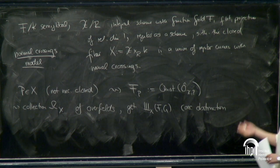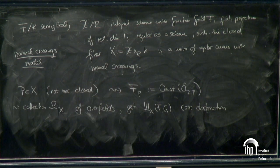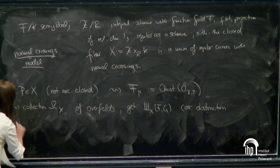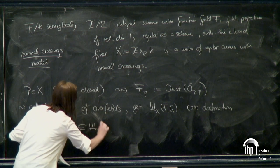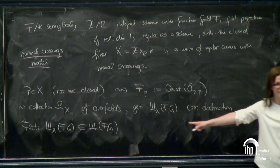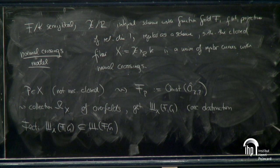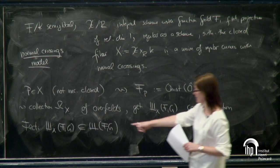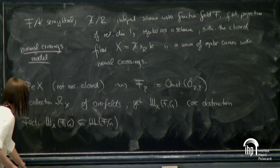This includes the generic points of components of X, giving us a first collection of overfields omega_X. With respect to that collection I can define a corresponding obstruction set, which I call Sha_X. Now if instead I look at discrete valuations of the field and their completions, there's actually a containment between these Sha sets — every completion F_v contains a field of the form F_p — so we get an inclusion of obstruction sets.